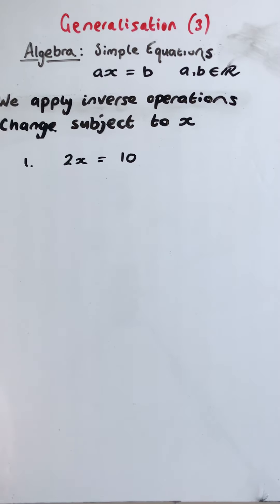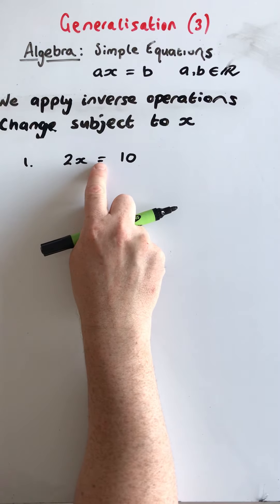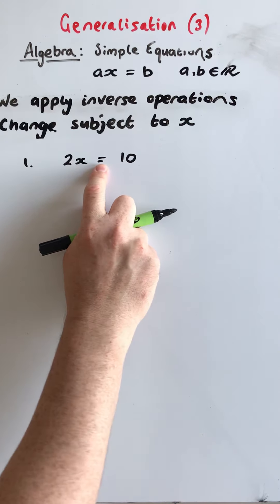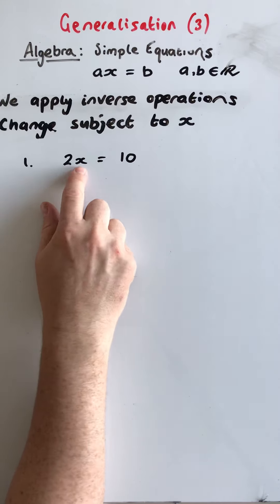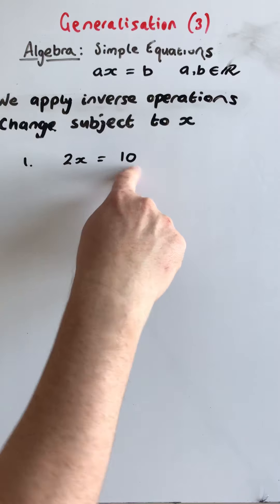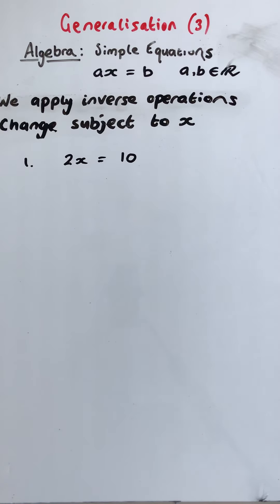2x equals 10. So the left hand side is equal to the right hand side at the minute. It's an equation because there exists an equals, there are variables. We have something to solve. So you'll know that straight away it's 5.